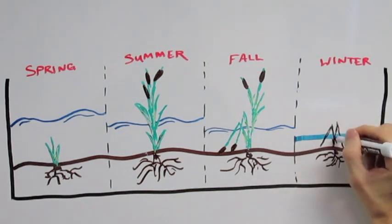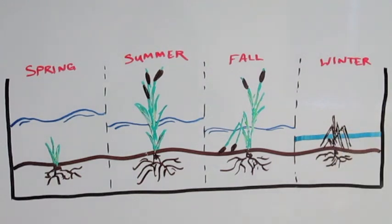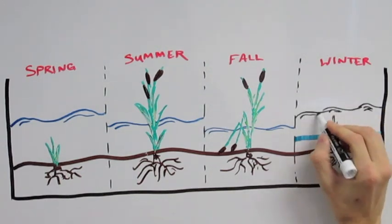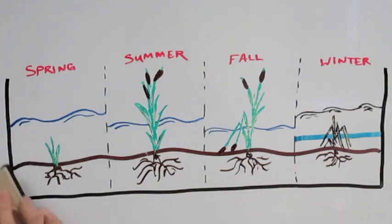Moreover, formation of ice limits water entering the wetland. Conversely, the ice sheet allows sedimentation to occur further due to reduced flows and winds.